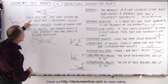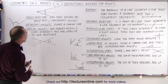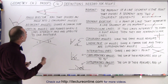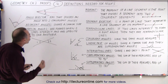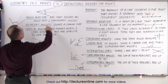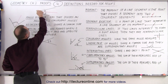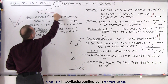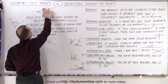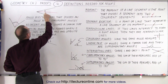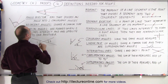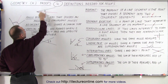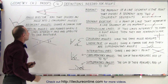An angle bisector is a ray that divides an angle into two congruent angles. Here we have an angle, there's the bisector — it takes that angle and divides it into two congruent angles, again indicated by that symbol.